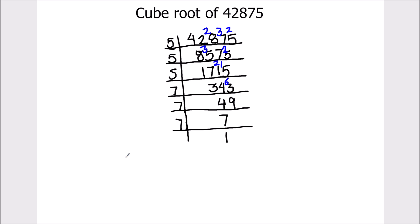Let's write it in terms of its factors. So 42,875 equals 5 times 5 times 5 times 7 times 7 times 7.